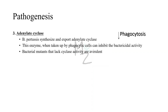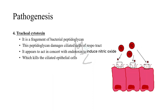The third virulence factor is adenylate cyclase. Bordetella Pertussis also synthesizes and exports adenylate cyclase — named with the suffix -ase because it is an enzyme. When taken up by phagocytic cells like neutrophils, it can inhibit their bactericidal activity, meaning neutrophils won't perform phagocytosis — so there is decreased phagocytosis. Bacterial mutants that lack cyclase activity are avirulent. The next virulence factor is tracheal cytotoxin, a fragment of bacterial peptidoglycan that damages ciliated cells of the respiratory tract. It appears to act in concert with endotoxin to induce nitric oxide, which kills the epithelial cells.